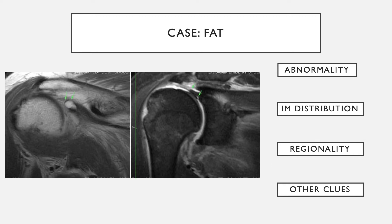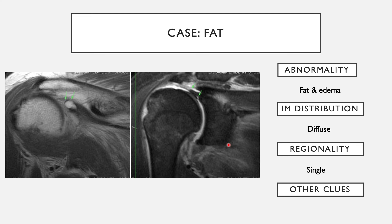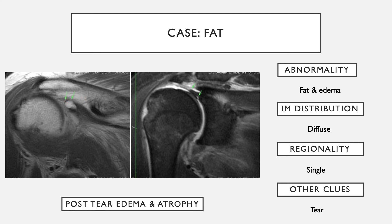Moving to cases of fatty infiltration: in this case, the infraspinatus is much brighter than the teres minor on T1, with a few streaks of muscle tissue but mostly fat. On the corresponding fluid-sensitive fat suppressed image, there is dark signal confirming fat. The abnormality is a combination of fat and edema involving a single muscle. Looking more carefully, there is a tear of the infraspinatus — possibly even a bony avulsion. This is an example of post-tear edema and atrophy of the muscle.